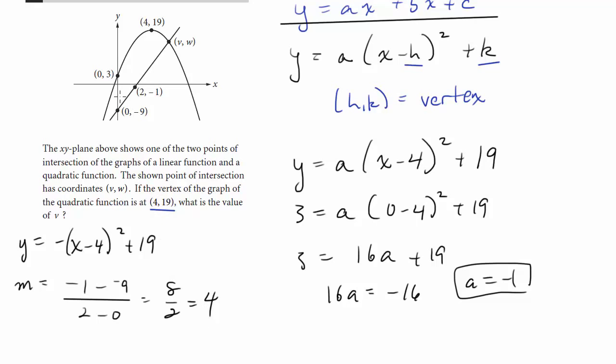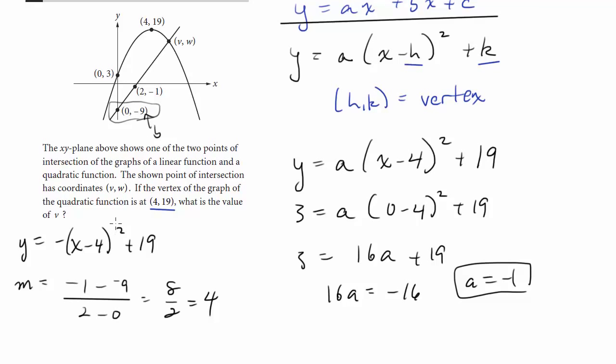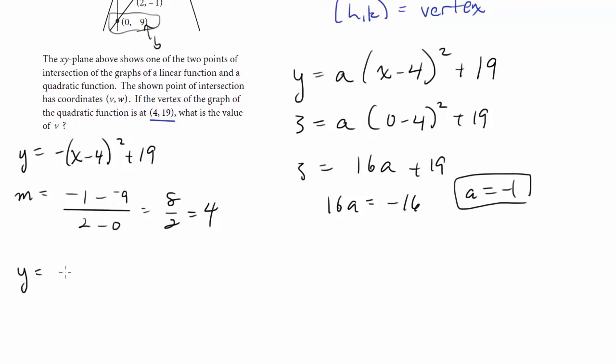So we know the slope is 4. We know the y-intercept, or the b-value, is this y-coordinate of this point right here, where it hits the y-axis. So the b-value is negative 9. Now we have an equation for our line: y equals 4x minus 9.